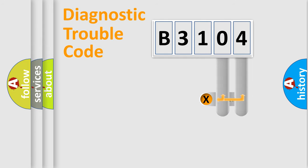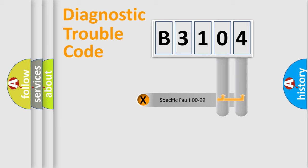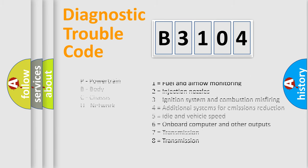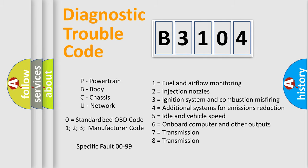Only the last two characters define the specific fault of the group. Such a division is valid only if the second character code is expressed by the number zero.